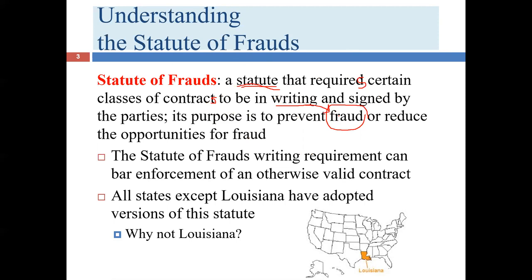I'm going to share some examples of what the English parliament was thinking when it decided to require that some contracts be in writing — to let you know what concerns existed and how this strategy was supposed to address them. But what I want you to focus on is not so much the fraud aspect, but the fact that we have to have a writing sometimes. The first half of this chapter will focus on: what kind of writing do we need, and what classes of contracts require it? For those classes, we do have that fifth element beyond the usual four.